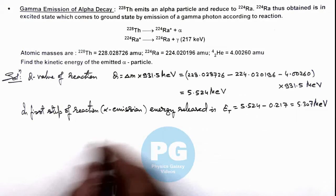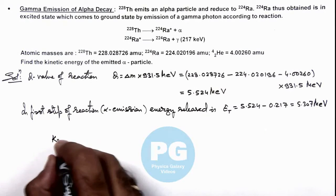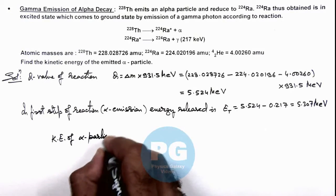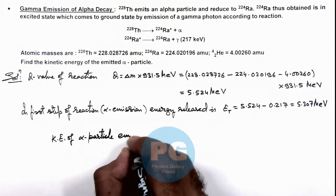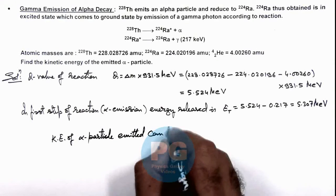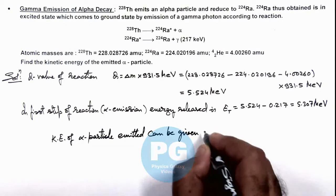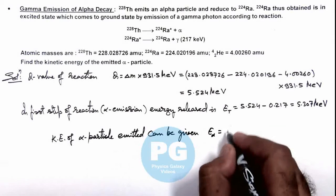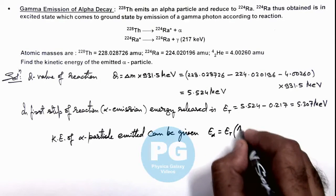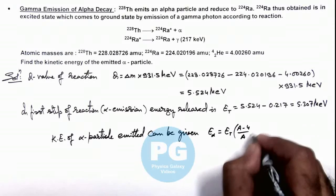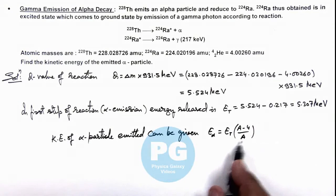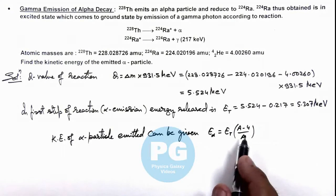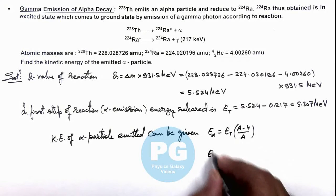So we can directly calculate the kinetic energy of alpha particle emitted. This we already studied in the basic conceptual videos. The energy of alpha particle we can write as total energy released multiplied by A minus 4 by A. This you can calculate by conservation of momentum and energy, for which you can refer the early concept videos we have already discussed.